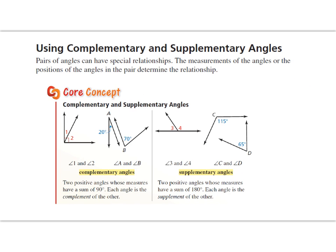We need to start by understanding some key vocabulary and core concepts, starting with complementary and supplementary angles. Pairs of angles can have special relationships, and most of this section is about these special relationships. The measurements of the angles or the positions of the angles in the pair determine the relationship — that's super important.